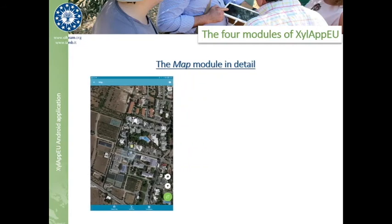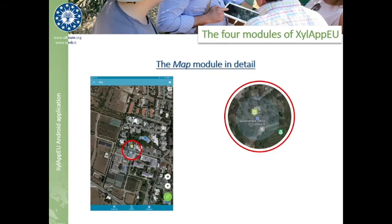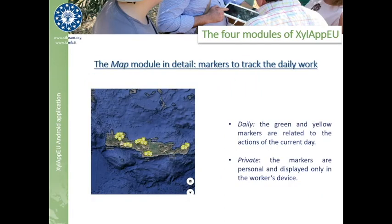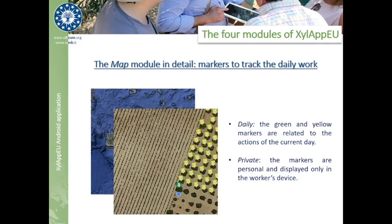The Map module is useful to check the situation of the sampling work that the tablet is doing on a particular day. There is a blue dot that indicates the tablet's current position, as well as markers that indicate where we took the samples in the territory. The last sample gets the green color, while the previous ones get the yellow color. The icon displayed inside the marker suggests whether we took a plant sample, an insect sample, or just performed a visual inspection. It's absolutely satisfying seeing all the samples taken with extreme precision and accuracy in a field when the sampling procedure is well done by the operator. Please remember that the green and yellow markers are related to the actions of the current day, and that markers are personal and displayed only on a worker's device.